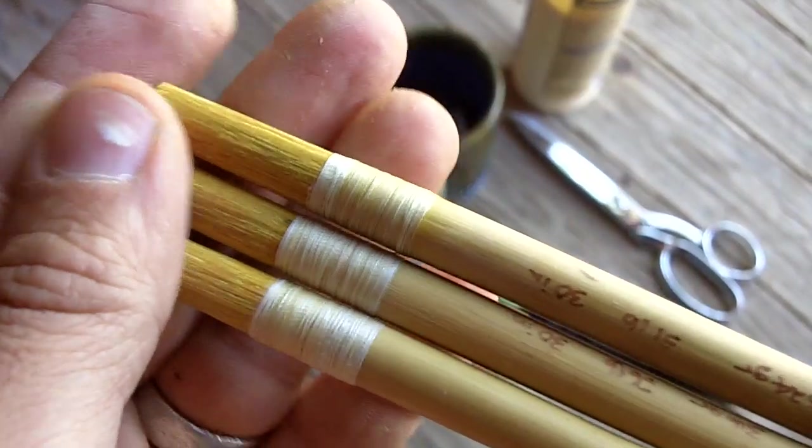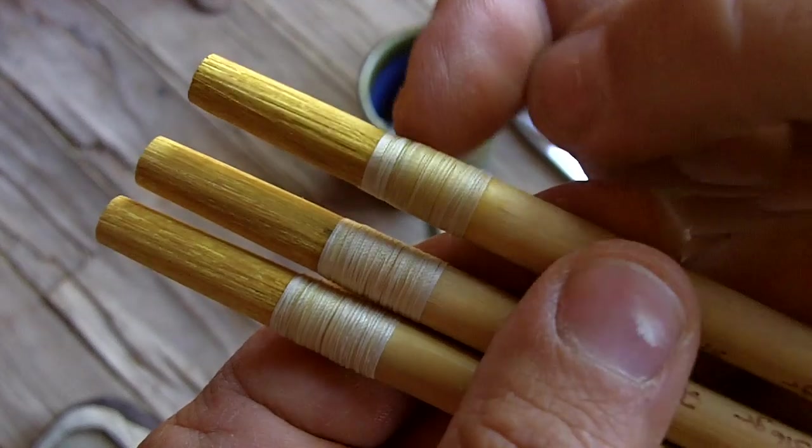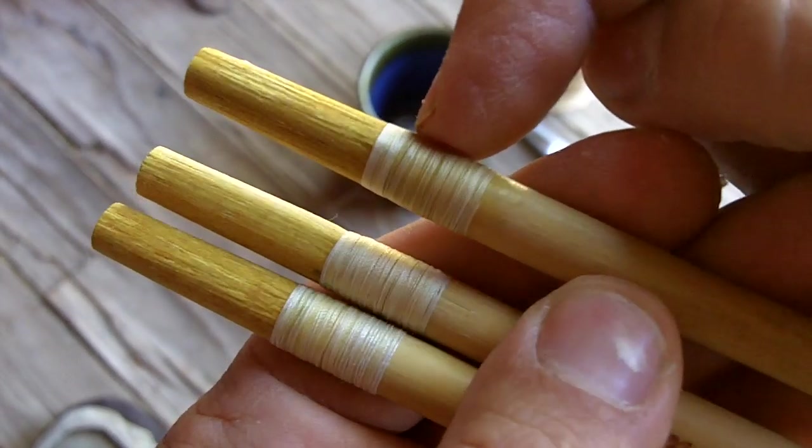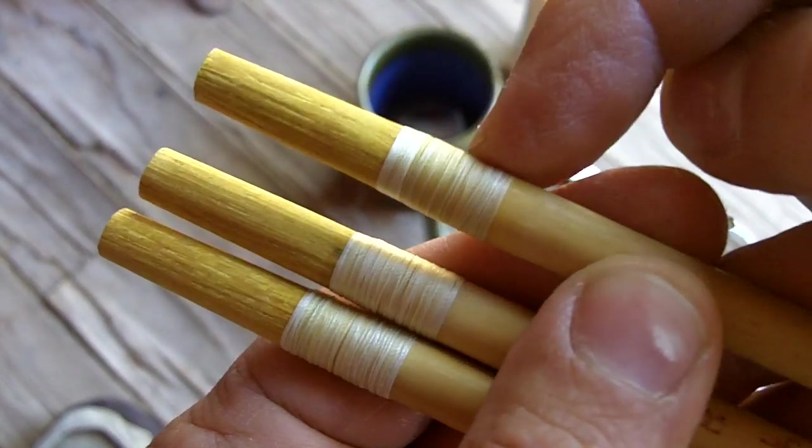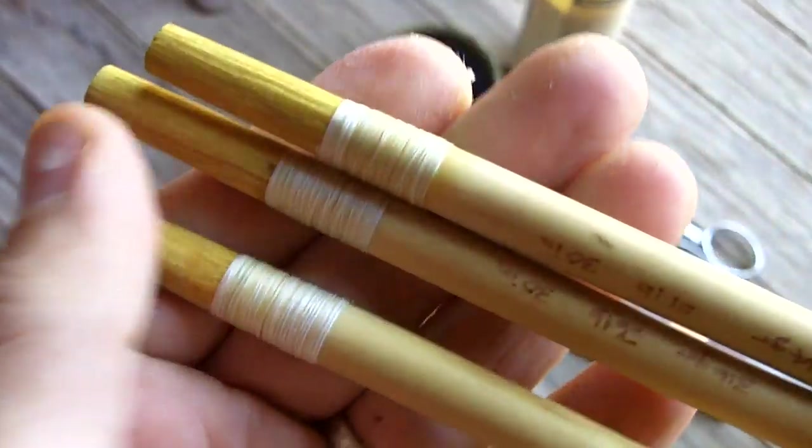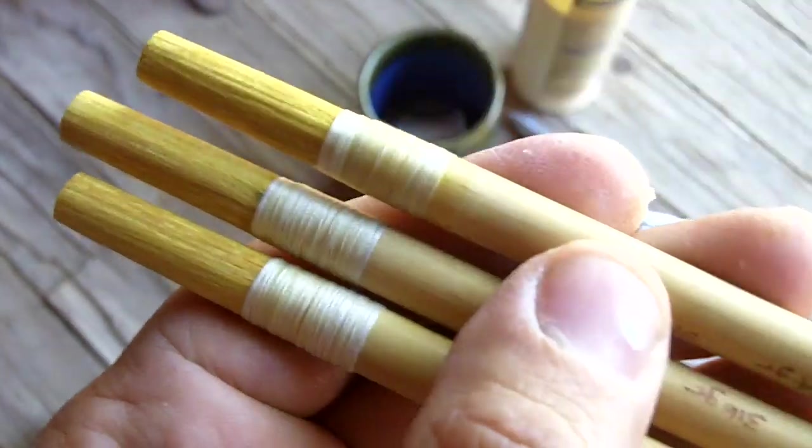I went ahead and finished the wrappings in the front. I did some extra wraps in that gap between the fore shaft and the main shaft, just to level it out. The glue is pretty dry. There's two layers of thread there.